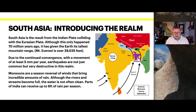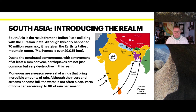Monsoons are a seasonal reversal of winds that bring incredible amounts of precipitation. Although the rivers and streams become very full, the water is often not clean or drinkable. Parts of India can receive up to six feet of rain per season.